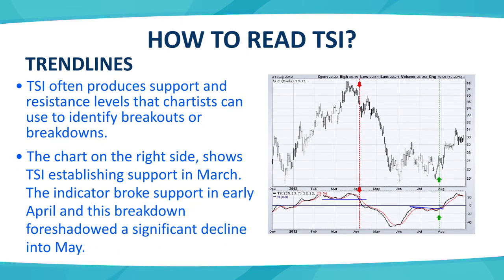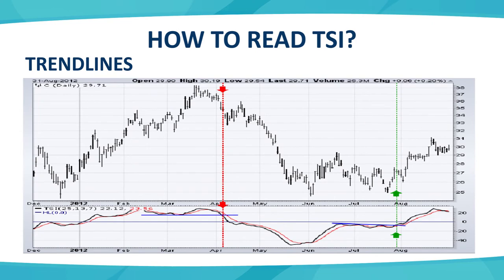Moving to the trendline strategy now. In the price chart, TSI will show resistance and support levels, which we can use to pick and confirm buying and selling signals. In the chart, we can see that in March, TSI formed a support, which held through April, and we saw prices move up in late April. In late July, TSI broke the downward trendline, and then we saw buying momentum. In this chart we can see the reversal of prices and execute our positions.